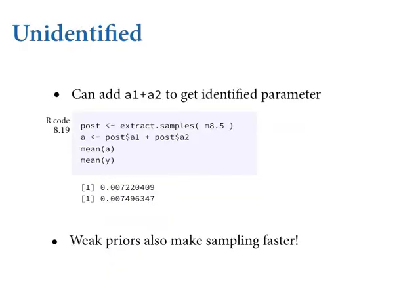You can extract the samples and re-identify the actual intercept by summing together the posterior distributions. The actual mean of the data is 0.0075, and the posterior mean for alpha — summing the two parameters together — is essentially the same thing. The whole premise of this course is that to do good applied statistics in a scientific context, you have to interact with the machine. You can't pretend there's just math and magic making everything come out right. You shouldn't trust your machine — or yourself.